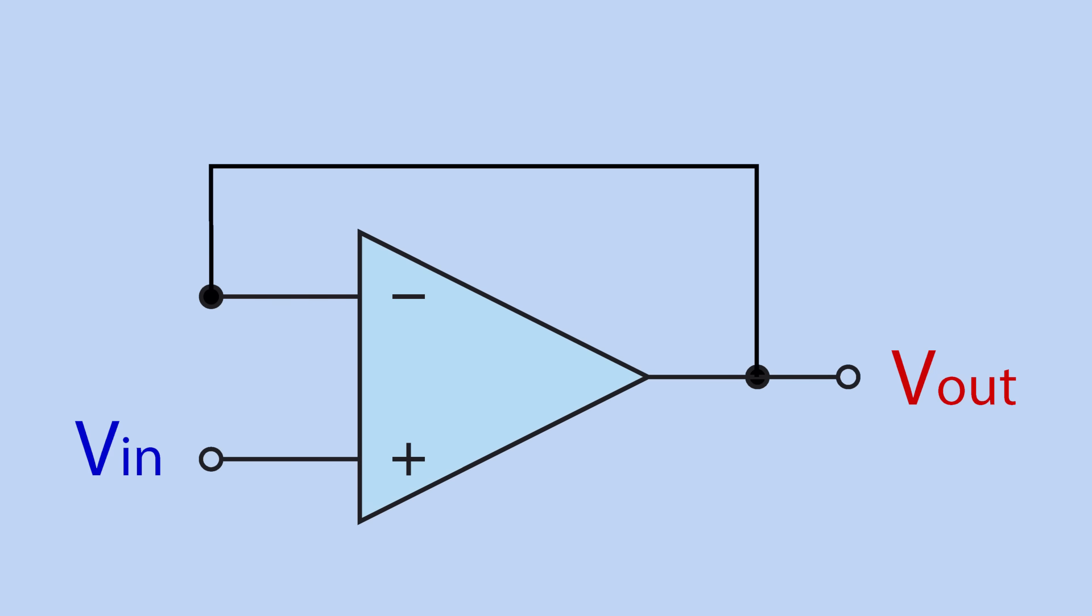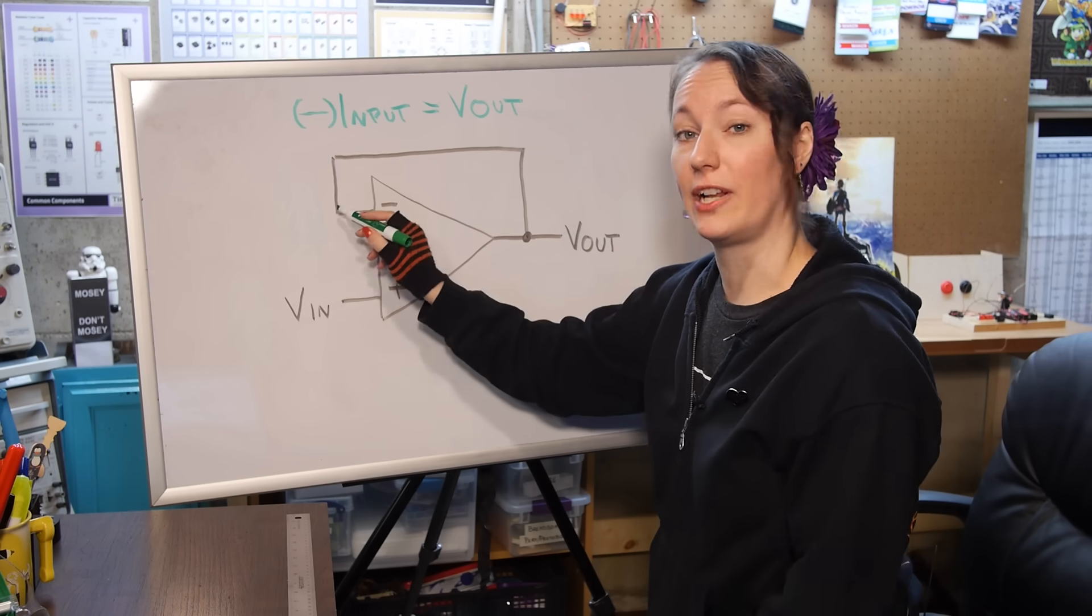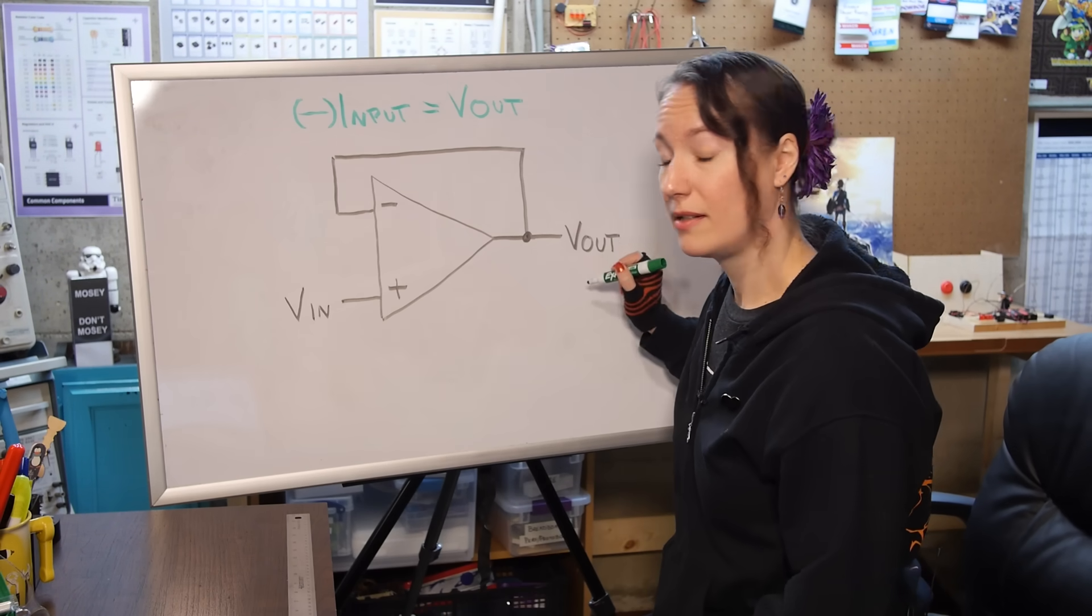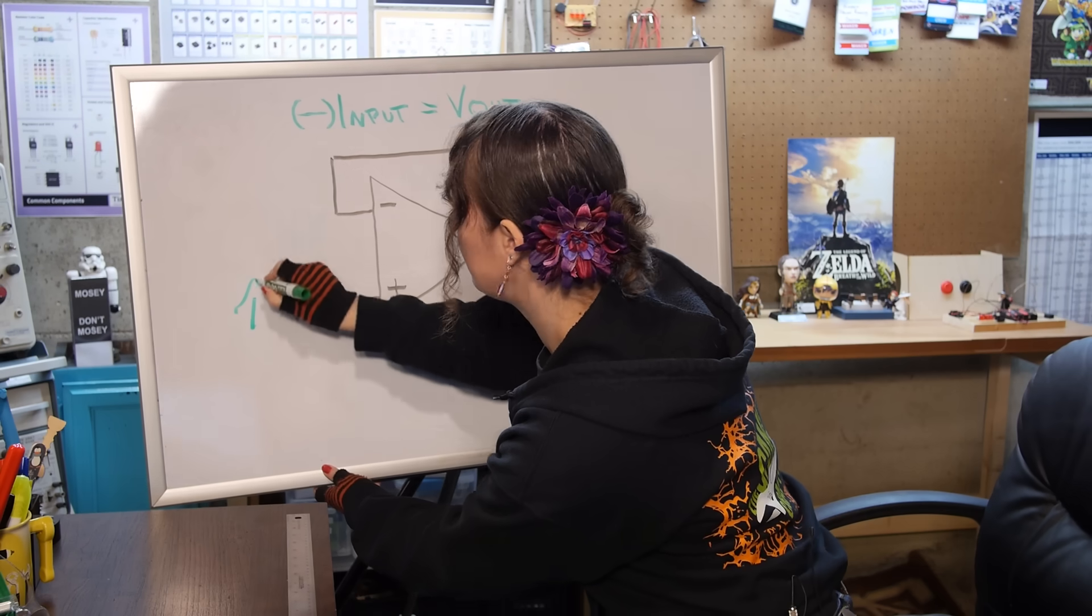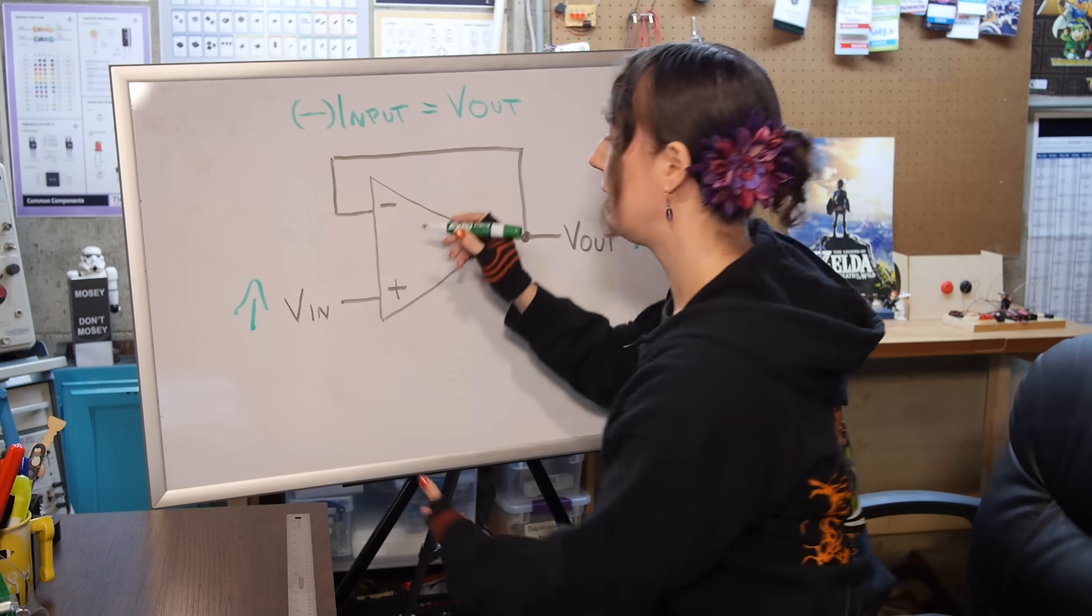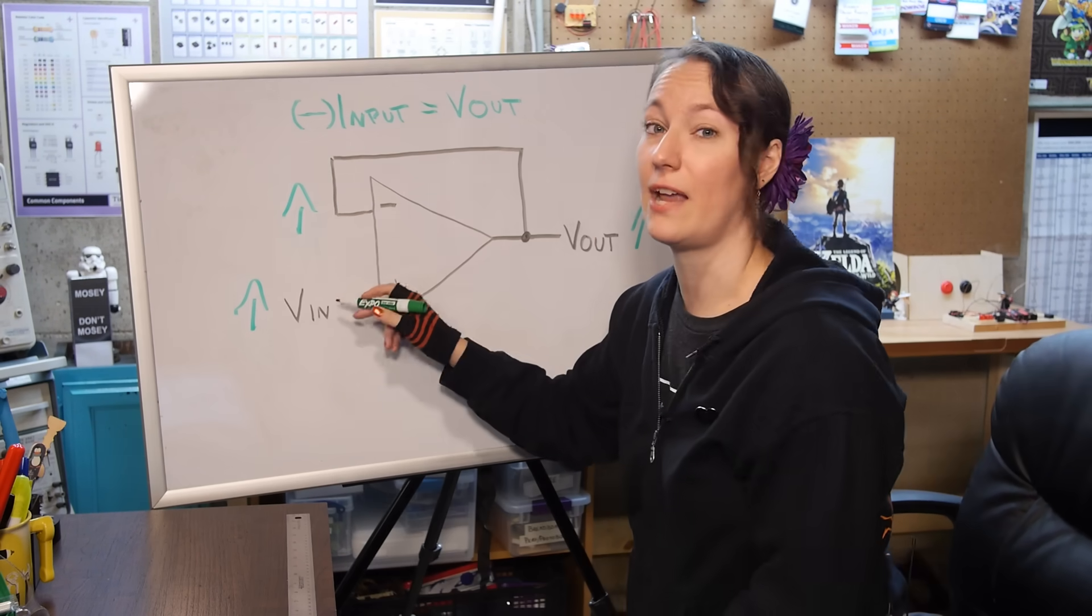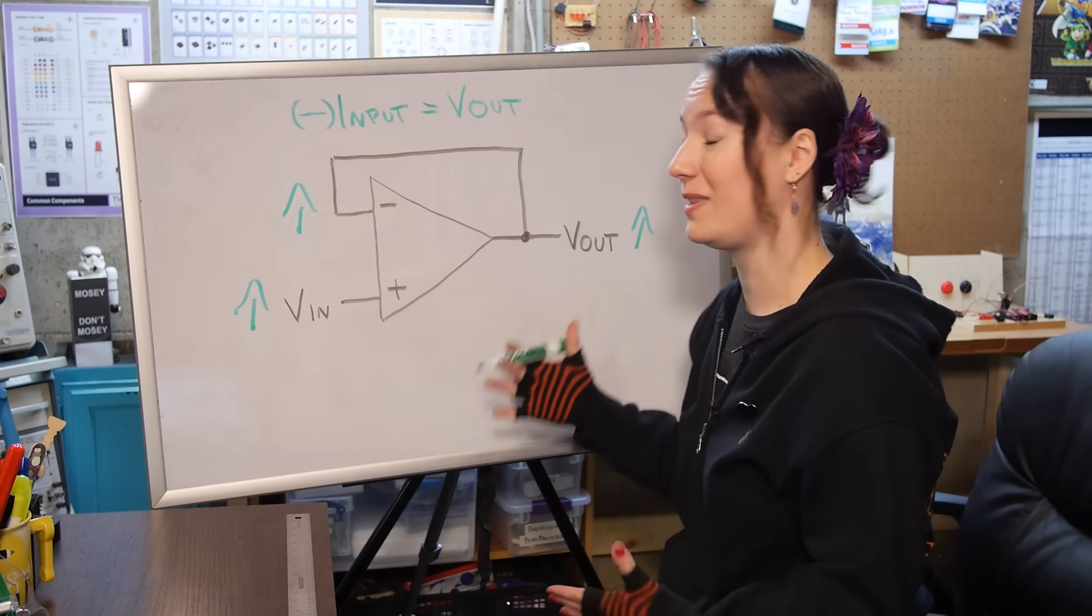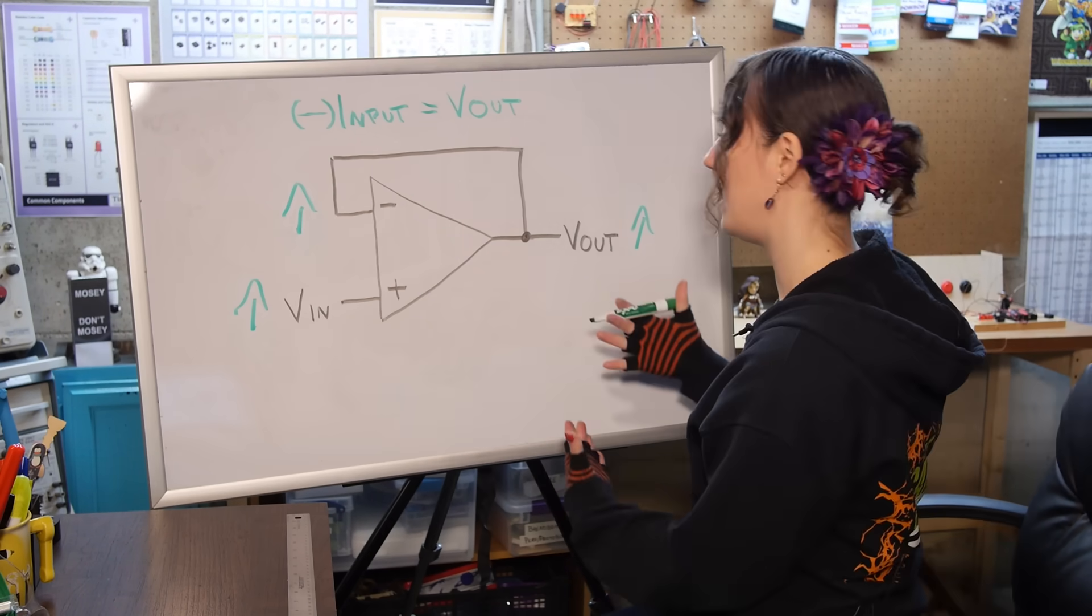But where the op amp really shines is when the gain can be controlled. For this, we need to create a feedback loop, putting the op amp in a closed loop configuration. Feedback is achieved by connecting the output back to one of the inputs. This is most commonly done with the inverting input creating negative feedback. So the voltage at the inverting input always equals V out. As the voltage at V in changes, the voltage at V out also changes. And the loop self-corrects, keeping the voltage at the inverting input near equal to that at V in, but just different enough to keep the microvolts differential needed to generate an output.